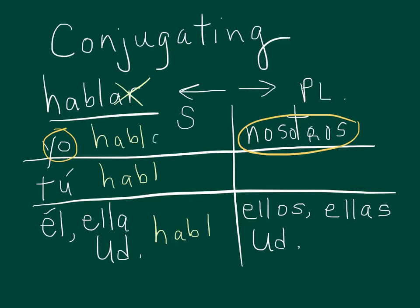The endings for the yo form are always o. The second person ending always ends with an s. The third person singular ending is a simple vowel a for ar verbs. When we work with the verb nosotros, we have our stem plus amos ending.